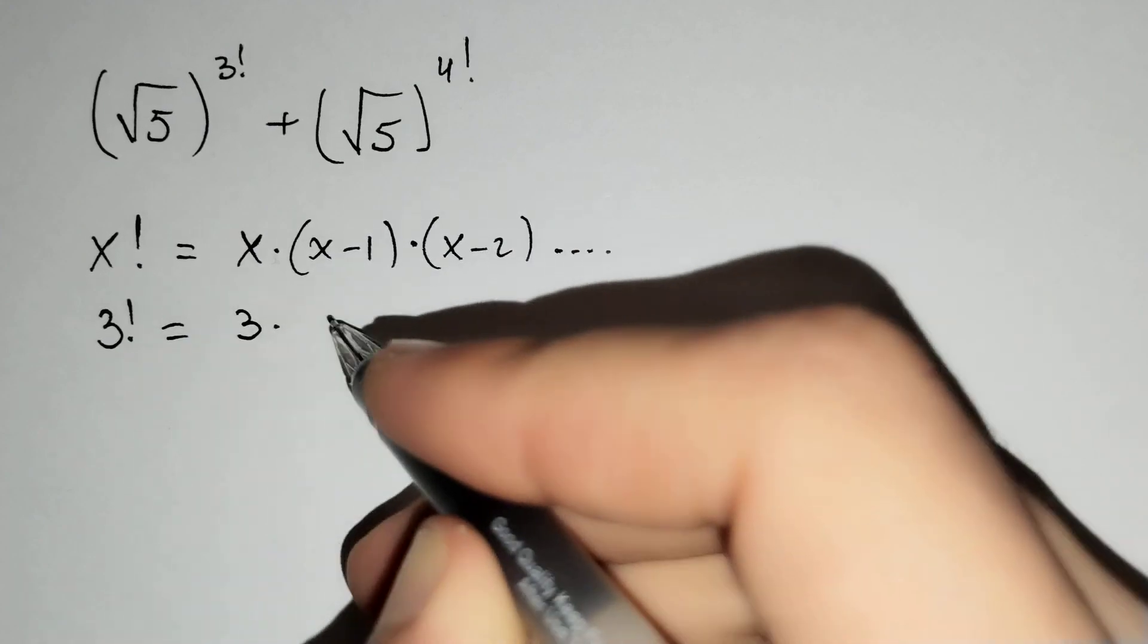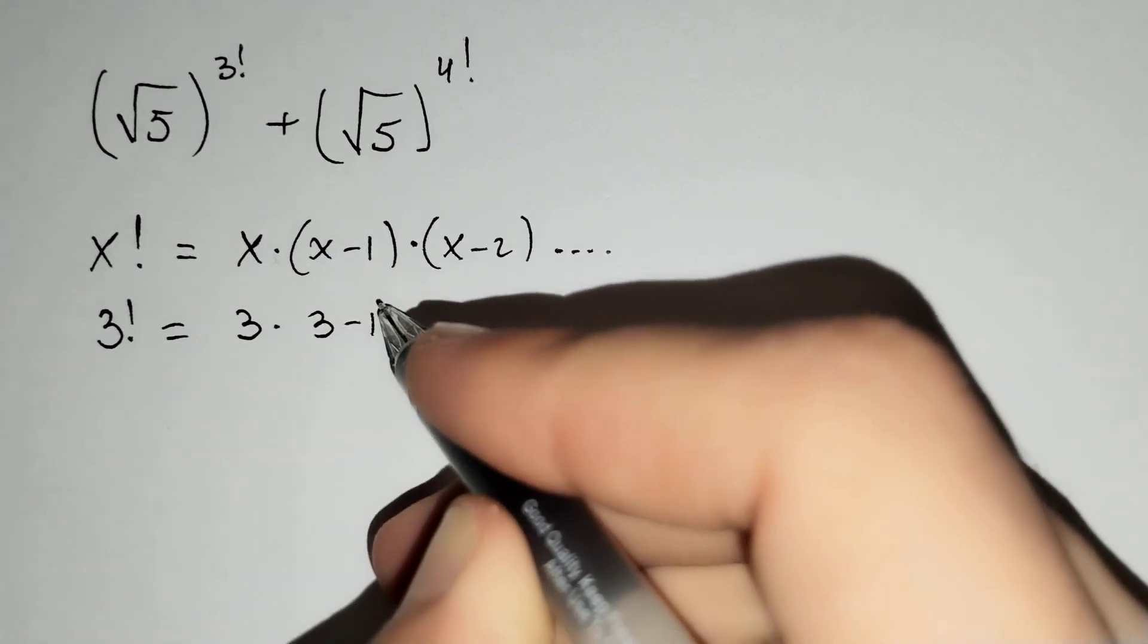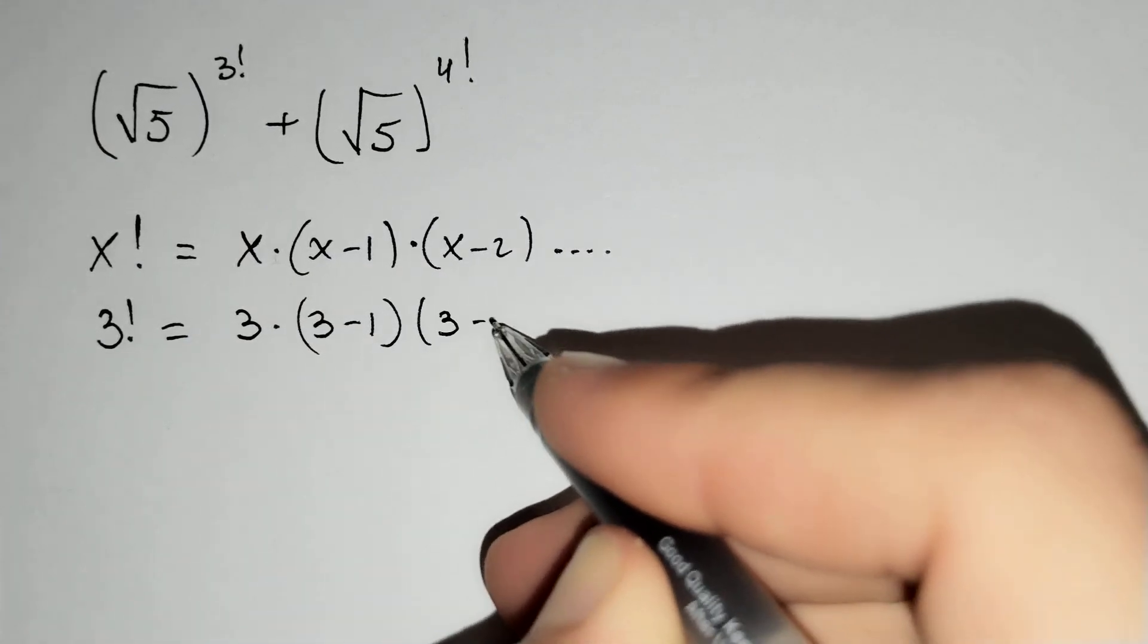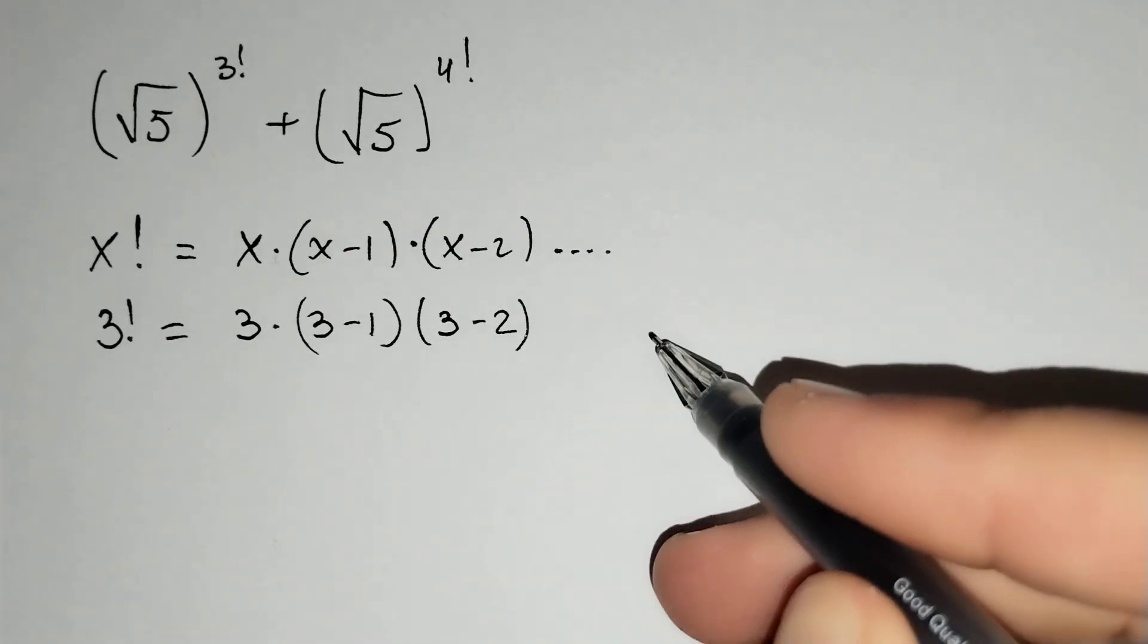Then, 3 factorial equals to 3 times 3 minus 1 times 3 minus 2 to the 1.